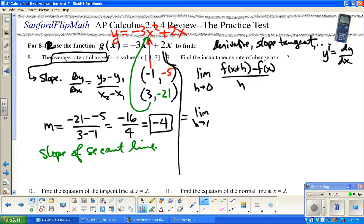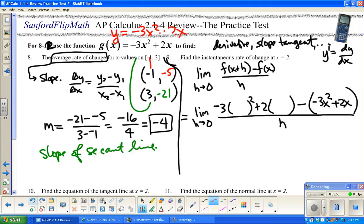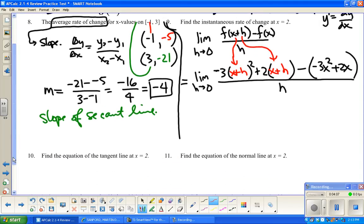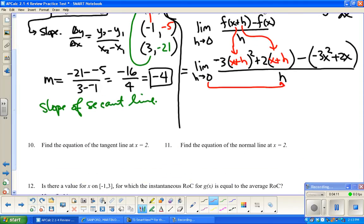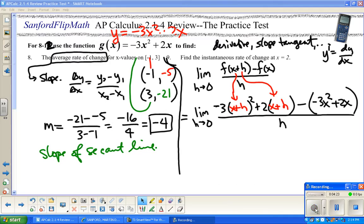So the limit as h approaches 0 of f of x plus h. I'm going to write negative 3 times something squared plus 2 times something. And that's going to be my f of x plus h minus negative 3x squared plus 2x, all of this over h. And what do you put right here? Well, you put x plus h there. So now it's a matter of doing a bunch of algebra.